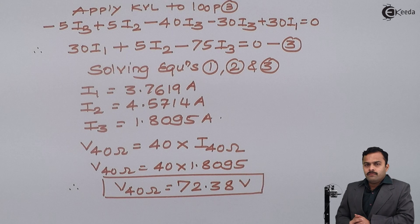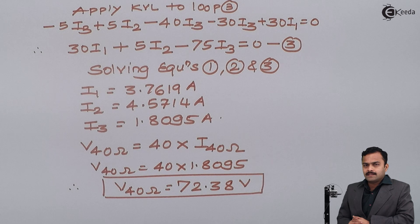Voltage drop across 40 ohm resistance. So here we have seen that whenever I know current flowing through a particular branch, I can get voltage drop across that particular branch if the resistance and current flowing through that branch is known to me. In subsequent videos, we will see more numericals based on mesh analysis. Thank you.